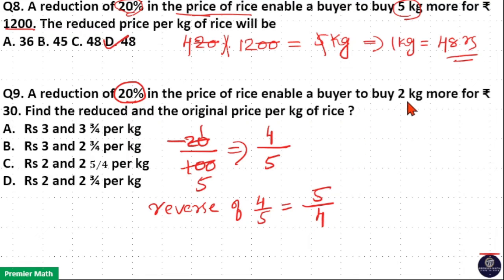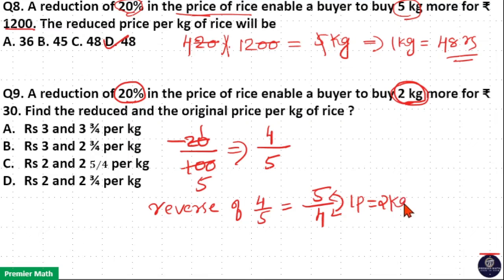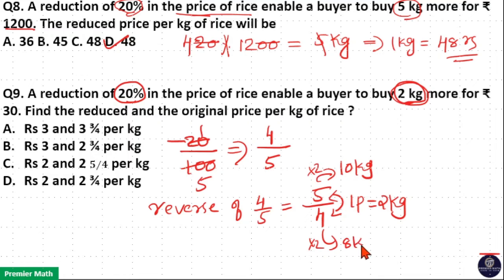This 5 by 4 is the quantity ratio. Here, 2 kilogram is the difference in quantity. That is, 5 parts minus 4 parts equals 1 part. This 1 part is equal to 2 kilogram as given in the question — 2 kilogram is the extra quantity. Now, if 1 part is 2 kilogram, then 5 parts equals 5 into 2, which is 10 kilogram. And 4 parts equals 4 into 2, which is 8 kilogram. Now, this 10 kilogram costs Rs. 30, which means 1 kilogram costs Rs. 3.